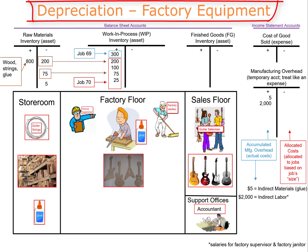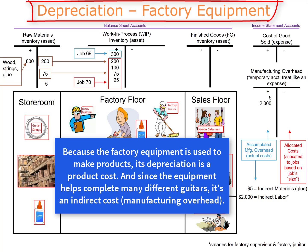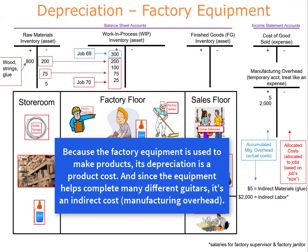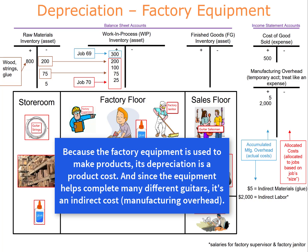Now we need to record the $500 of depreciation on the factory equipment. Since the factory equipment is necessary to build the products, it's a product cost, not a period cost. Therefore the depreciation cannot be expensed. It must be classified as manufacturing overhead, which is an indirect cost, since the factory equipment is used to make many different jobs.